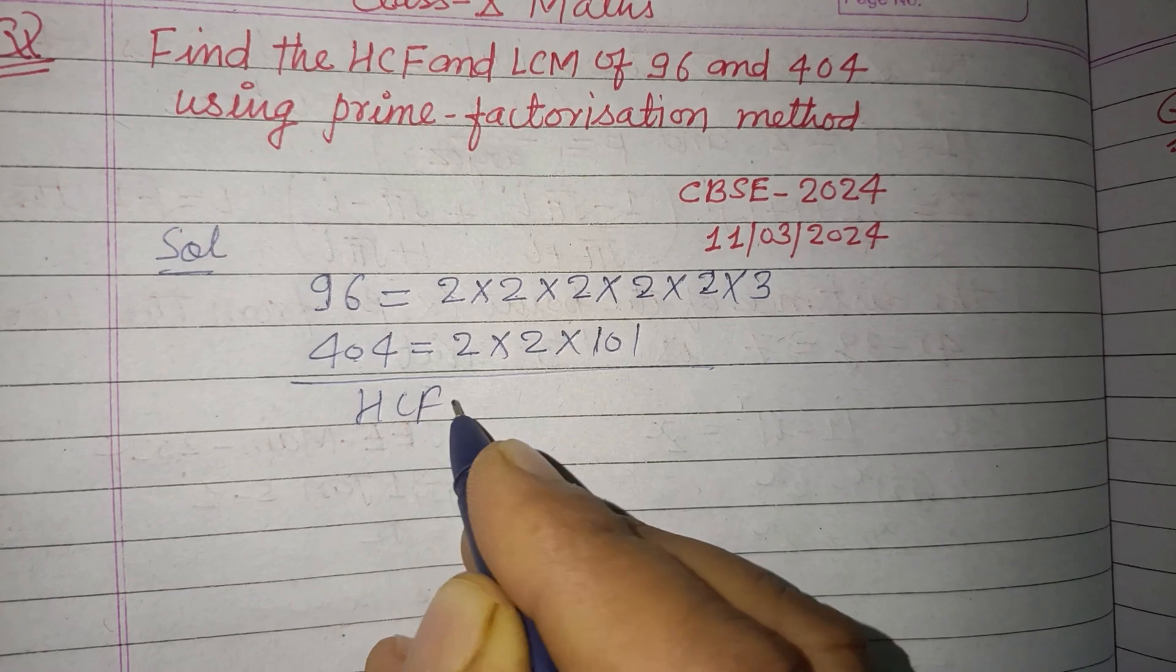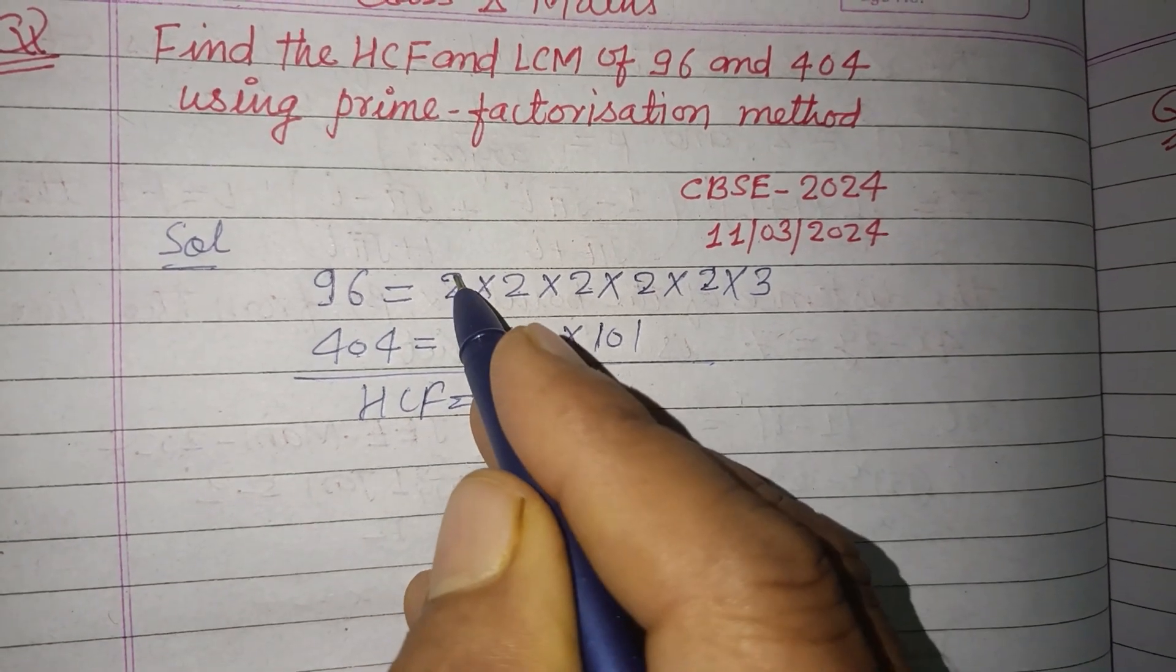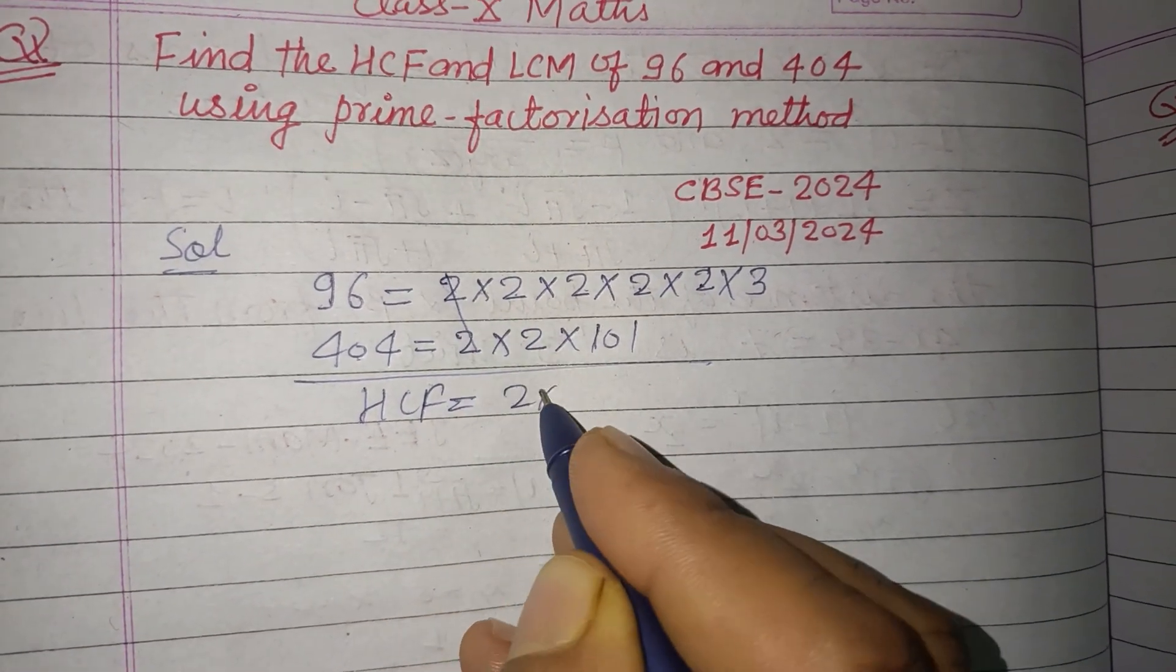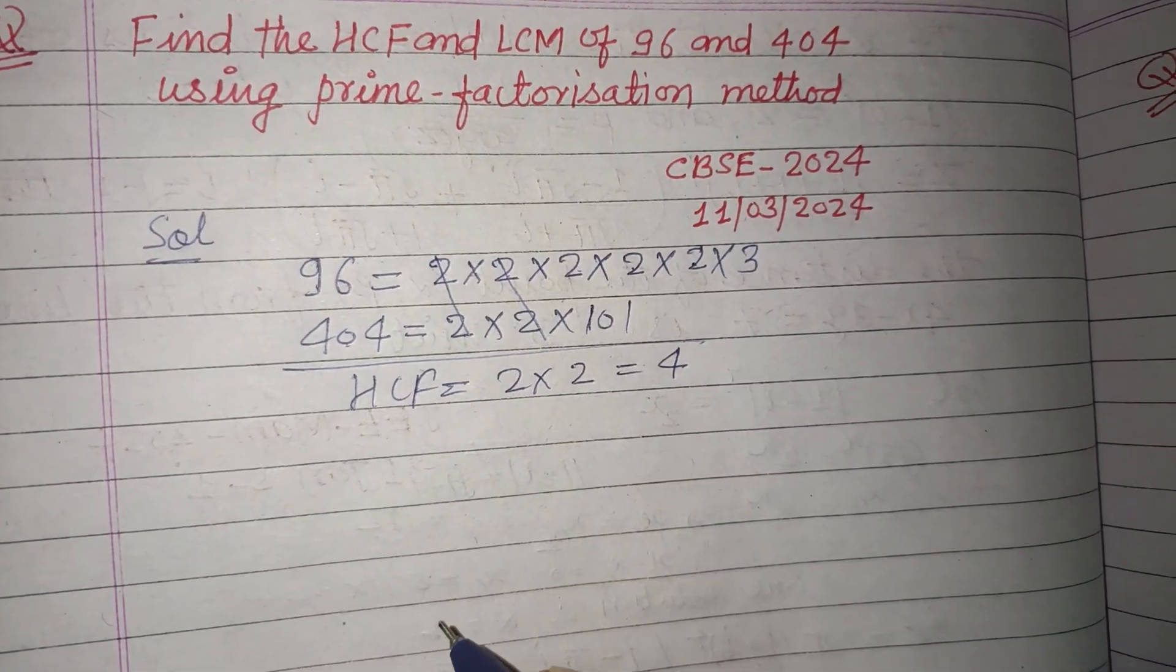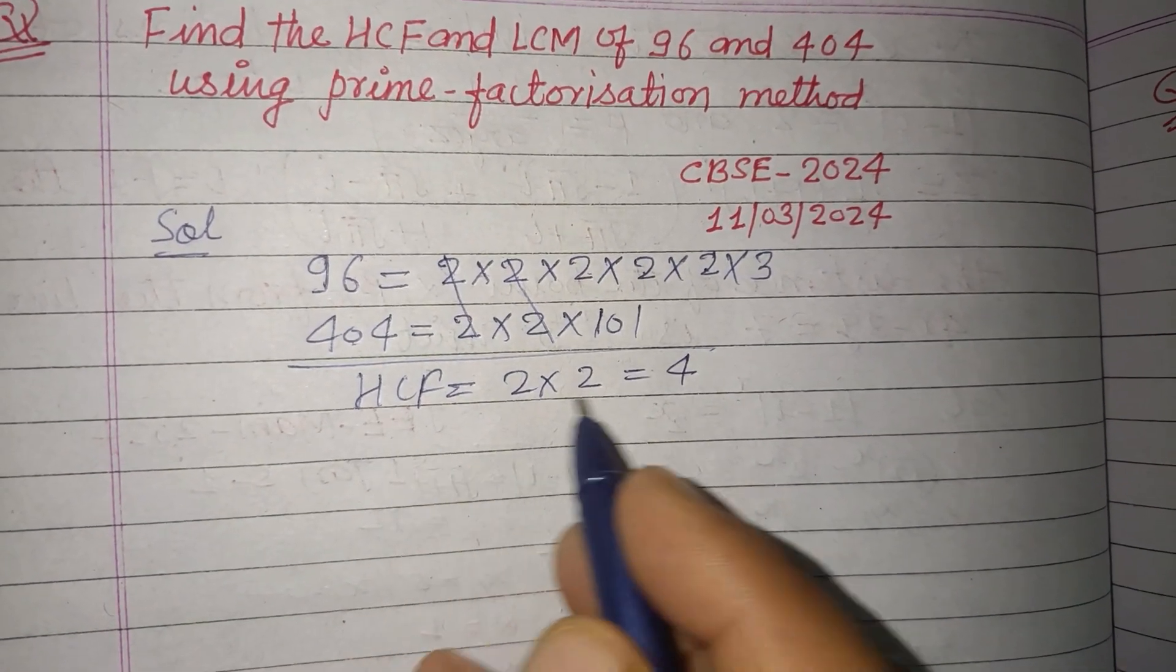So HCF of this are the common factors. This is 2 into 2. So 4 is the common factor. HCF is 4.